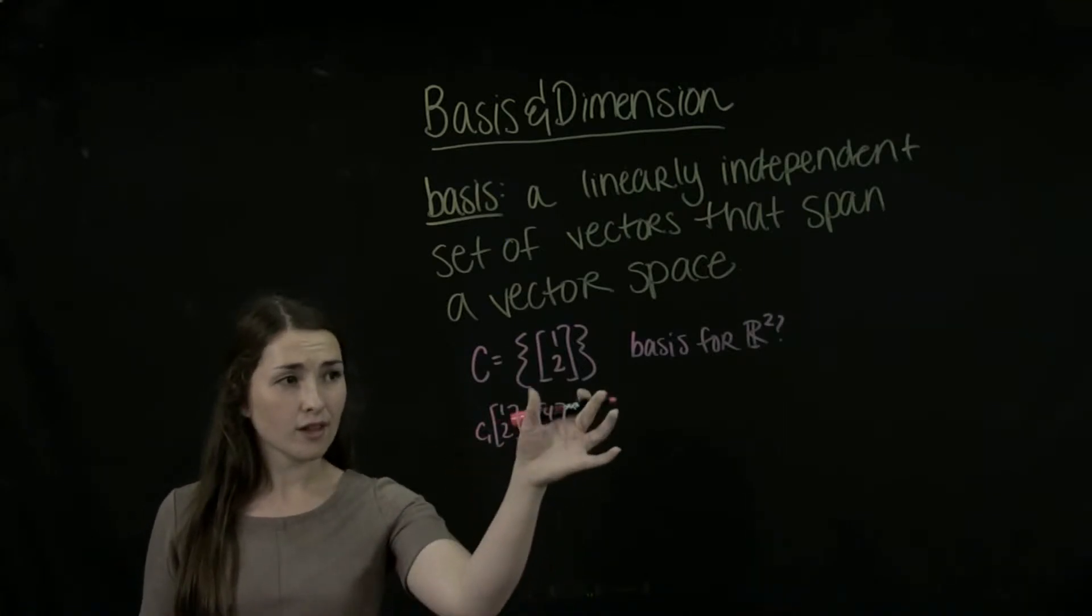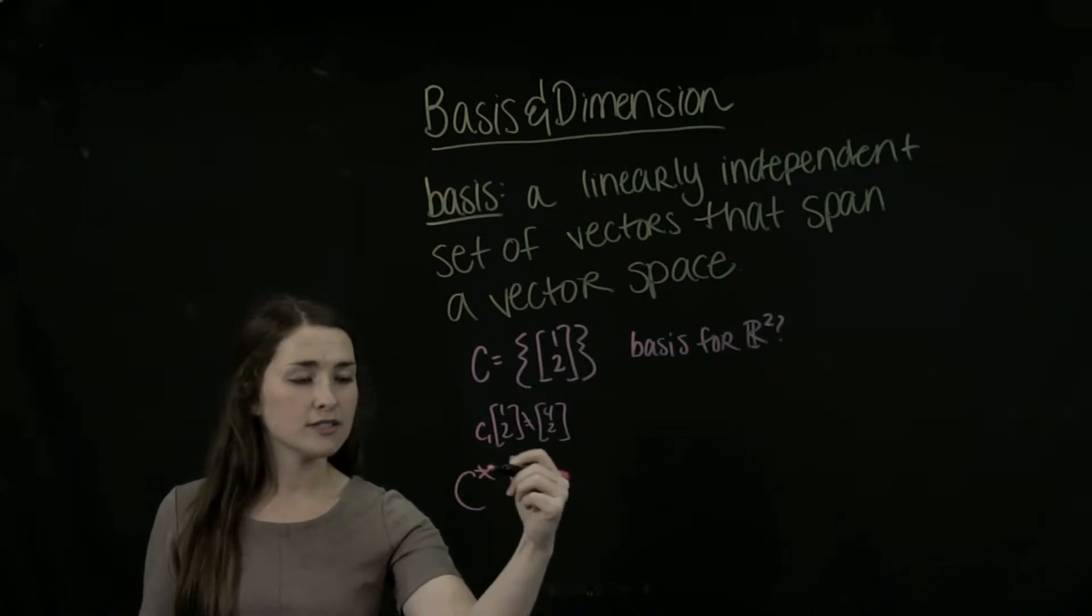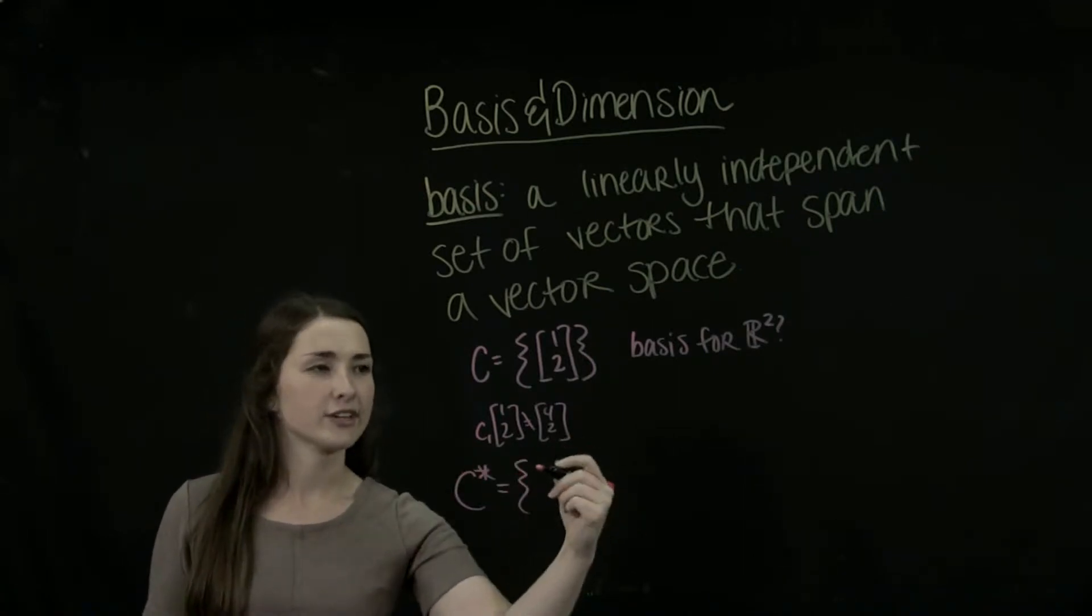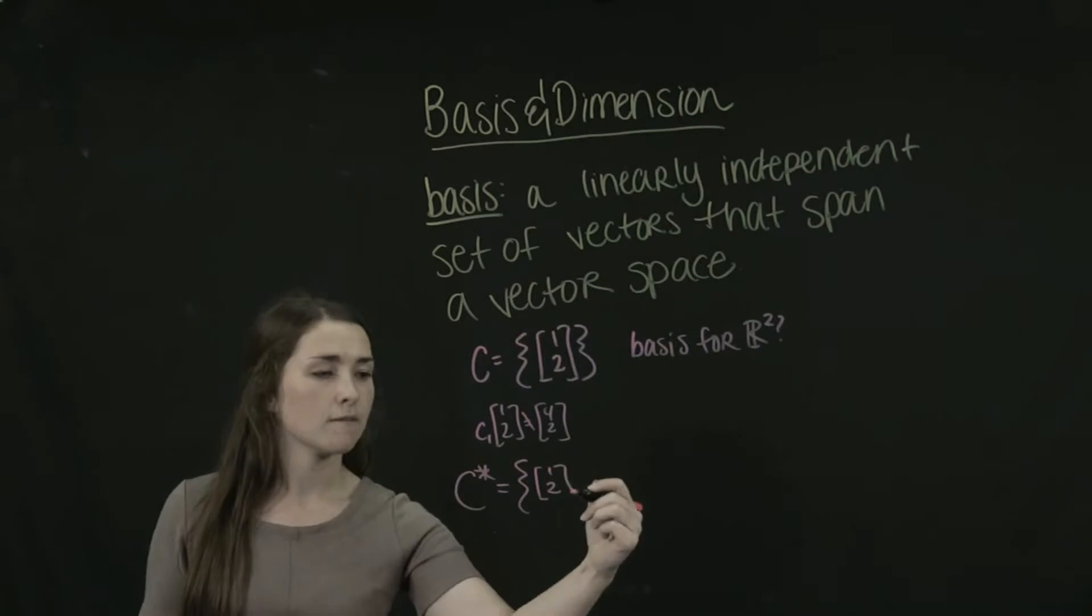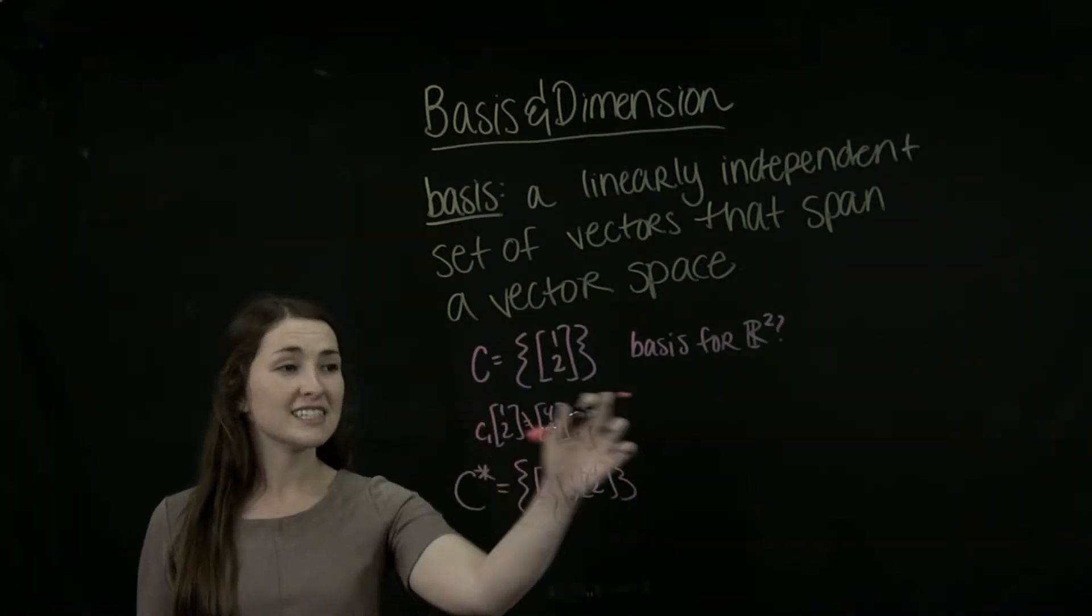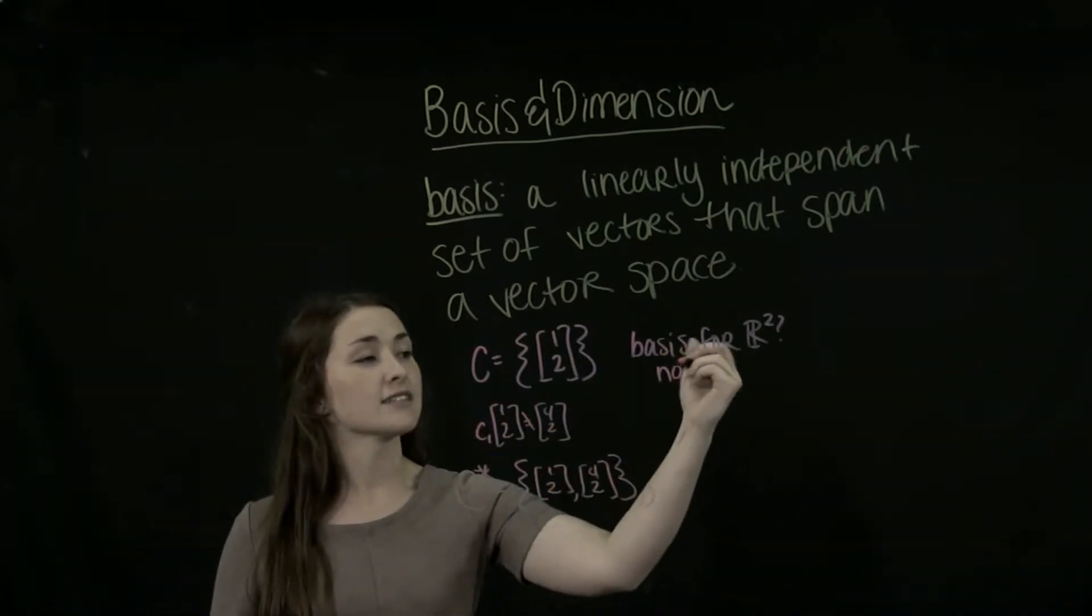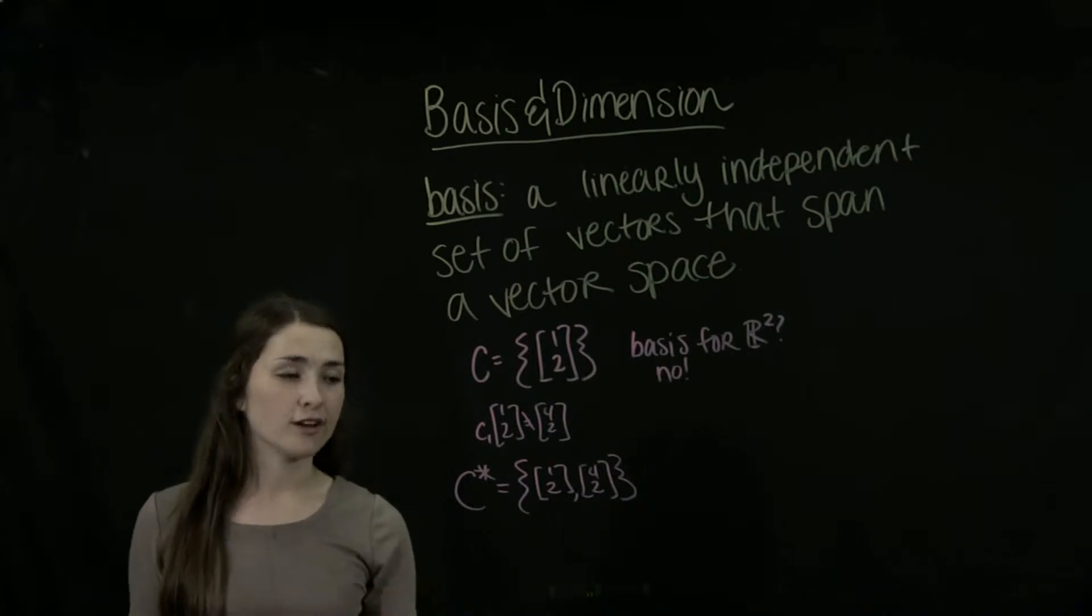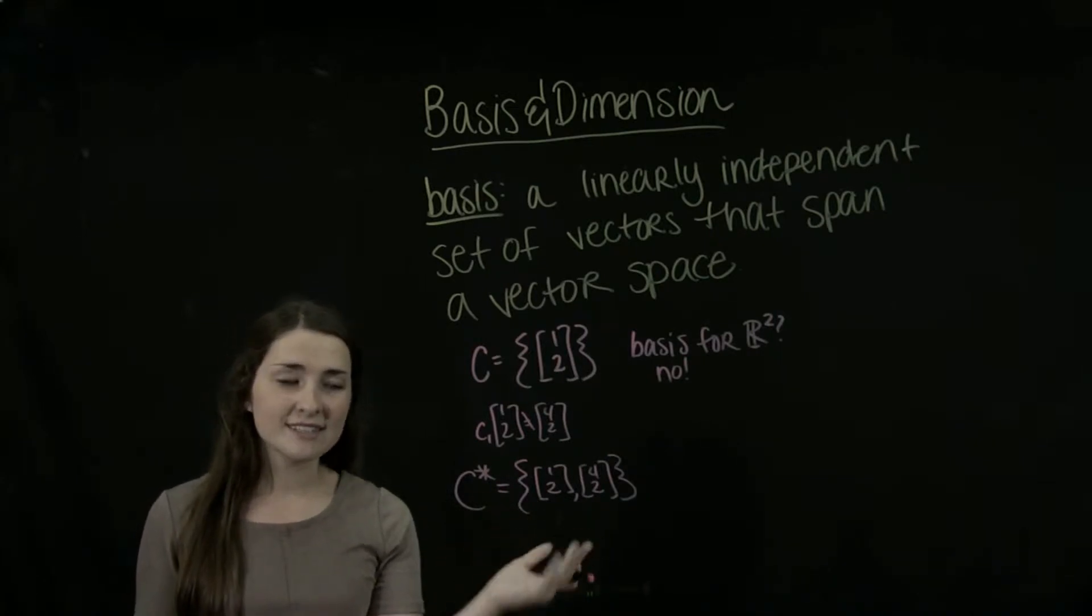So now, we can actually create a new C star and include this vector here. So even though C here does not form a basis for R2, our C star will. And why is that?